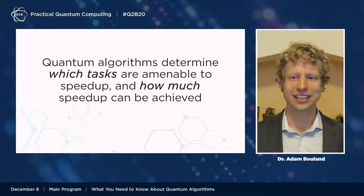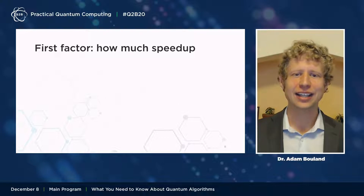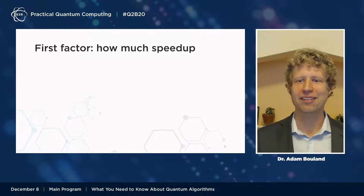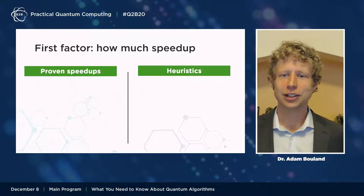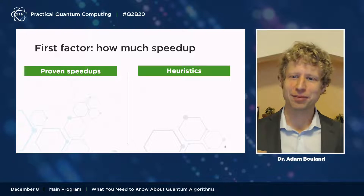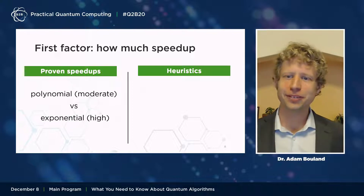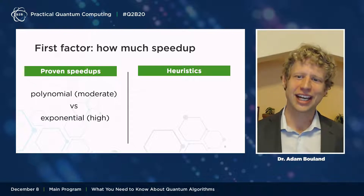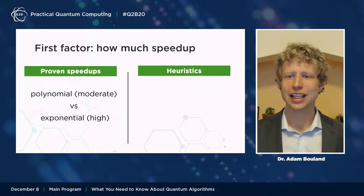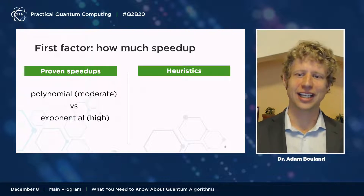When considering a quantum algorithm and whether it's relevant to your particular application, there are two key factors to keep in mind. The first factor is how much speedup does the quantum algorithm provide — this controls how much impact it could have on your time to solution. Quantum speedups fall into two categories. The first are proven speedups: quantum algorithms for which we have a mathematical proof that the algorithm will find the solution faster than the best-known classical algorithm. These proven speedups can be polynomial versus exponential, corresponding to moderate versus very high practical impact.